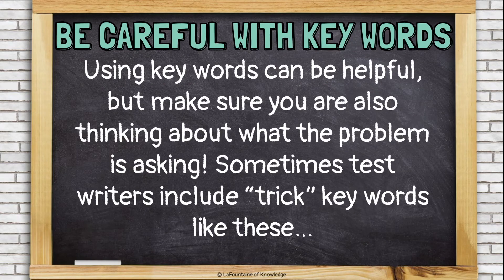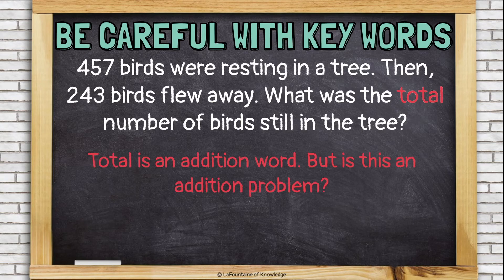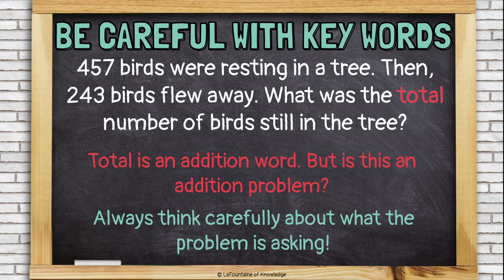But remember, we need to be careful when we're using keywords. It can be helpful, but we also have to make sure we're thinking about what the problem is asking. Sometimes test writers include trick keywords, like these. Take a look at this problem: 457 birds were resting in a tree. Then, 243 birds flew away. What was the total number of birds still in the tree? Here I have the word 'total,' and total is an addition word — but is this an addition problem? Always think carefully about what the problem is asking. If I really think about what's happening, I have some birds in a tree and then some of them fly away, and I'm trying to figure out how many birds are left. That's not an addition problem at all. This is a subtraction problem because we're taking birds away. So the word 'total' is a trick keyword in this problem.